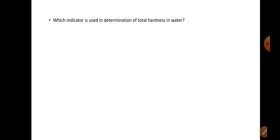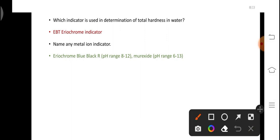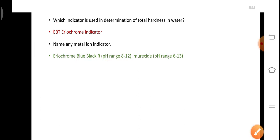Which indicator is used in determination of the total hardness in water? Commonly we use EBT. Its full form is eriochrome black T. Can you name any other metal ion indicator? In absence of EBT, we can also use eriochrome blue black R. Its pH range is 8 to 12. And murexide, its pH range is 6 to 13. And the pH range of EBT is 8 to 10. So we need to maintain the pH of 10 during the course of titration.